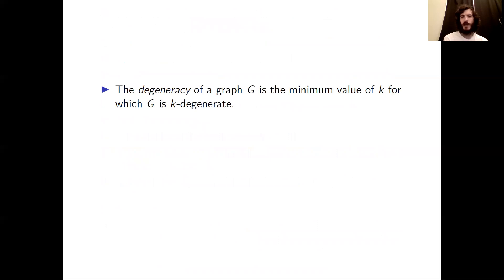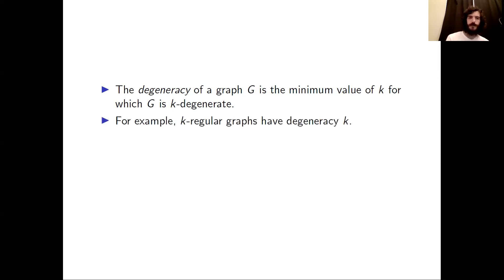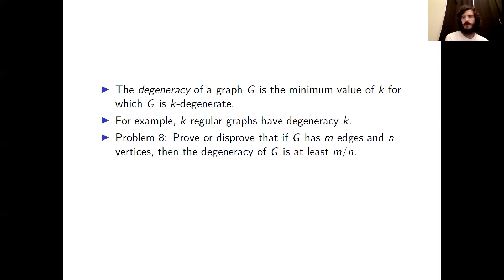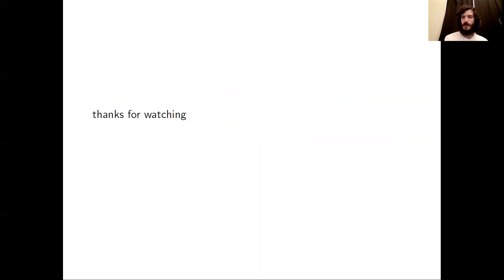We defined k-degenerate earlier; there is a related term called degeneracy. The degeneracy of a graph G is the minimum value of k for which G is k-degenerate. For example, k-regular graphs have degeneracy equal to k. As a final problem: prove or disprove that if G has m edges and n vertices, then the degeneracy of G is at least m over n.